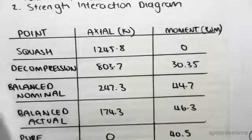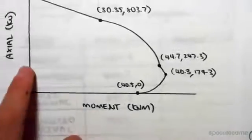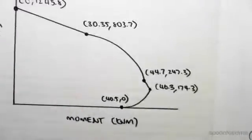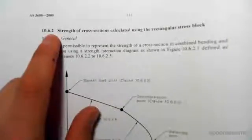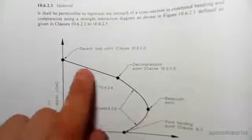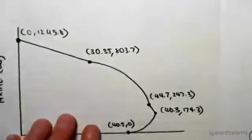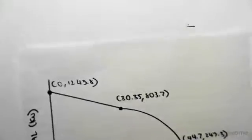So all you would do then is come to your diagram, which is moment against axial, and just plot in all the points. So this looks pretty similar to what's in the code - here's the strength interaction diagram for the code in section 10.6.2. That's what it's going to look like. We've drawn out here, I've drawn in all the points.